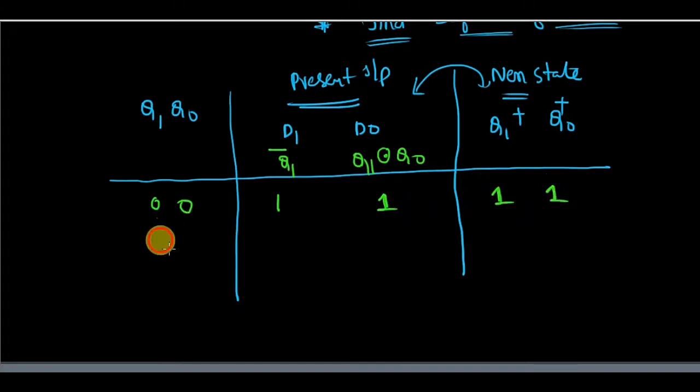Now the present state for the next clock cycle will become 1 1. Now it will be 0 and it will be 1. So my next state will be 0 1. Now my present state will become again 0 1. So it will be q1 bar so it is 1 and this is 0. My next state will become 1 0.